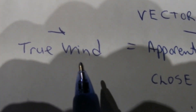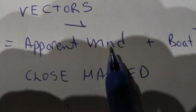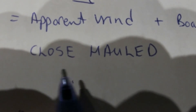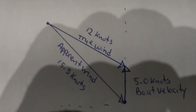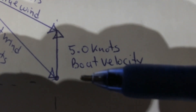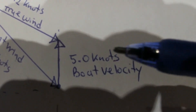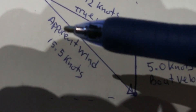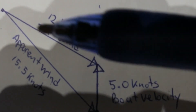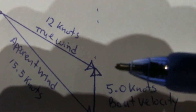Remembering these are all vectors: the true wind vector equals the apparent wind vector plus the boat velocity over the ground. We're on a close haul, so I estimate the apparent wind angle from the arrow on top of the mast. Boat velocity from GPS is 5 knots; apparent wind from my monitor is 15.5 knots. Drawing this to scale gives me a true wind of 12 knots.